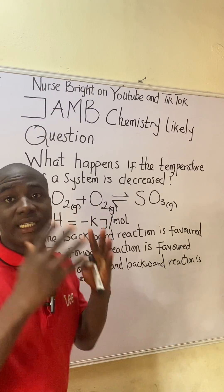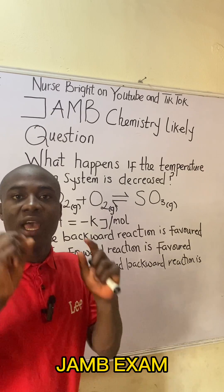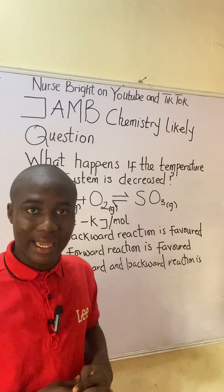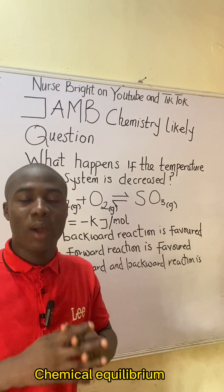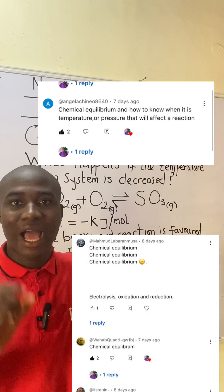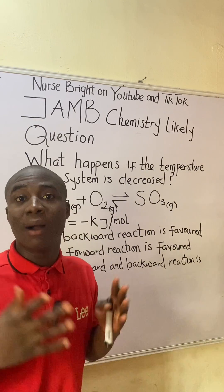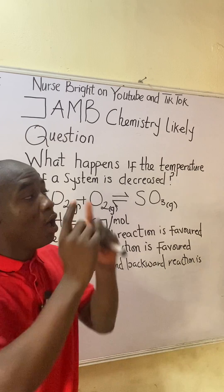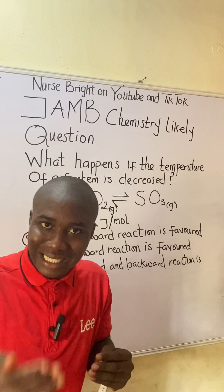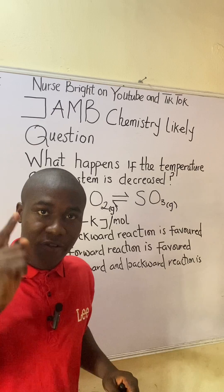If you came across this question in the JAMB exam, how will you solve it? It's actually very easy. This particular question is from the topic in chemistry called chemical equilibrium. So many students in my DMs and comment section have been finding this part of chemistry very difficult, but in the course of this video I'm going to make it very easy by solving this practice question.